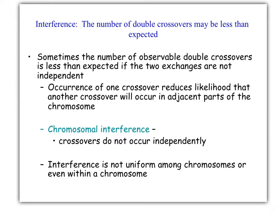Interference is when crossovers do not occur independently, and a crossover on one side reduces the likelihood that another crossover will occur. That's called chromosomal interference. We always have to take that into consideration when we're looking at distances.